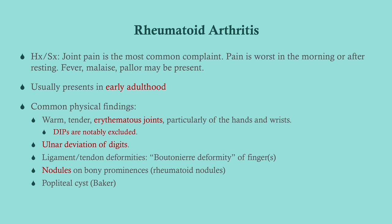We look for joint pain especially worse in the morning, plus systemic signs — fever and malaise. Pallor may be present because chronic inflammation can produce anemia of chronic disease. RA usually presents in early adulthood — think 30s and 40s — though in men it tends to present later. Common physical findings include inflammatory joint changes especially in the hands and wrists. Later, ulnar deviation of the digits appears, along with boutonniere and swan neck deformities, rheumatoid nodules on bony prominences, and a popliteal (Baker's) cyst behind the knee.